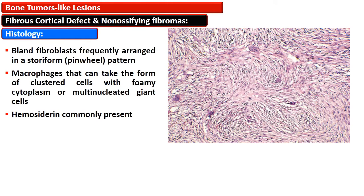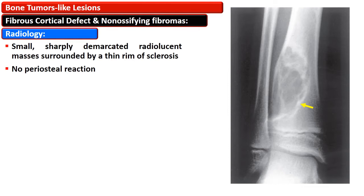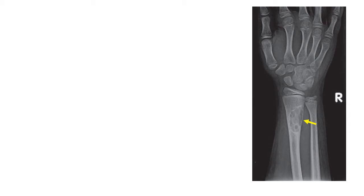On biopsy, these lesions are composed of plump fibroblasts arranged in a pinwheel or storiform pattern, as evident in photomicrographs. There can be abundance of macrophages which aggregate or form cluster cells with foamy cytoplasm, and sometimes giant cells are also formed. Hemosiderin deposition is commonly present. This non-ossifying fibroma of the distal tibial metaphysis shows an eccentric radiolucent lesion surrounded by a thin sclerotic rim with no periosteal reaction. Another case of non-ossifying fibroma shows a lytic radiolucent lesion with a sclerotic margin in the distal radius.